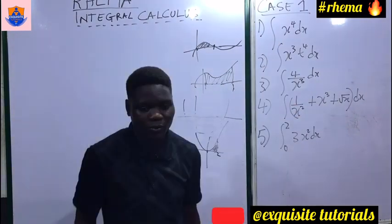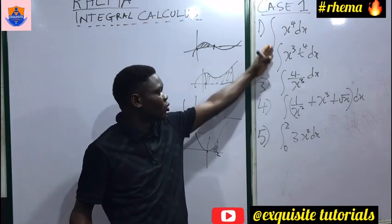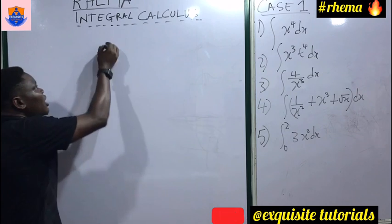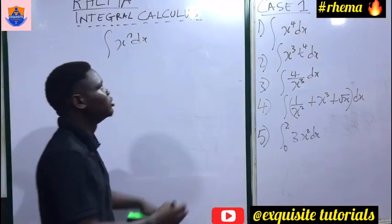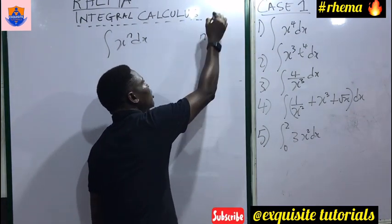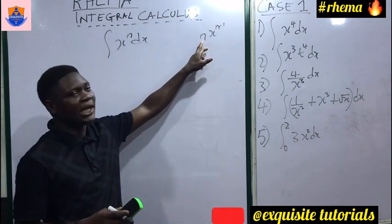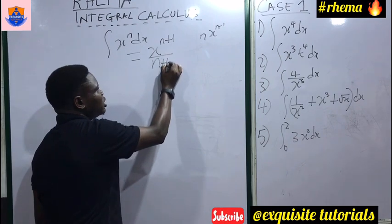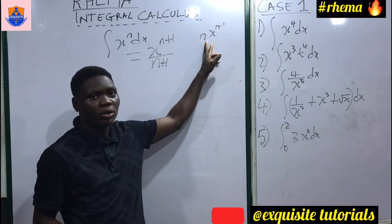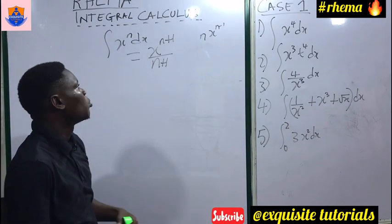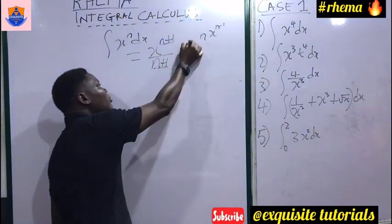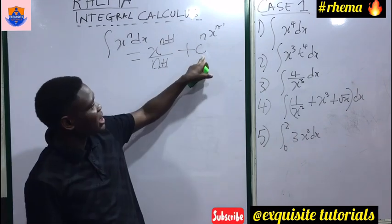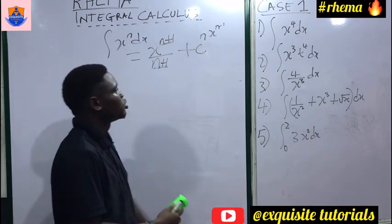The first case of integral calculus deals with integrating x raised to a power. When you have x raised to power n and you integrate it: in differentiation you bring down n and subtract one from the power, but in integration you add one to the power and divide by that new power. You must do the same thing to the denominator. Also, don't forget to add a constant C, because when you differentiate a constant you get zero.